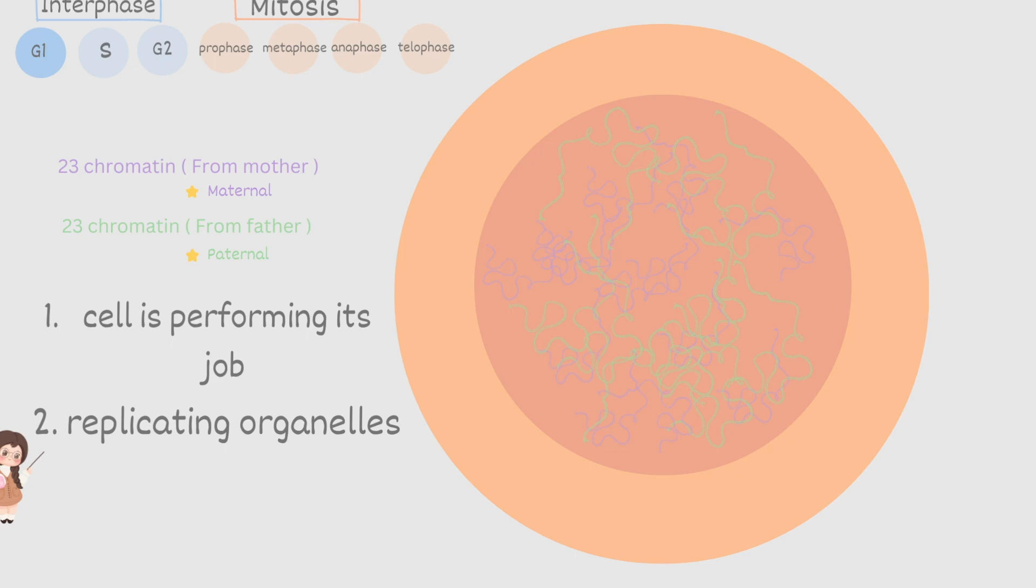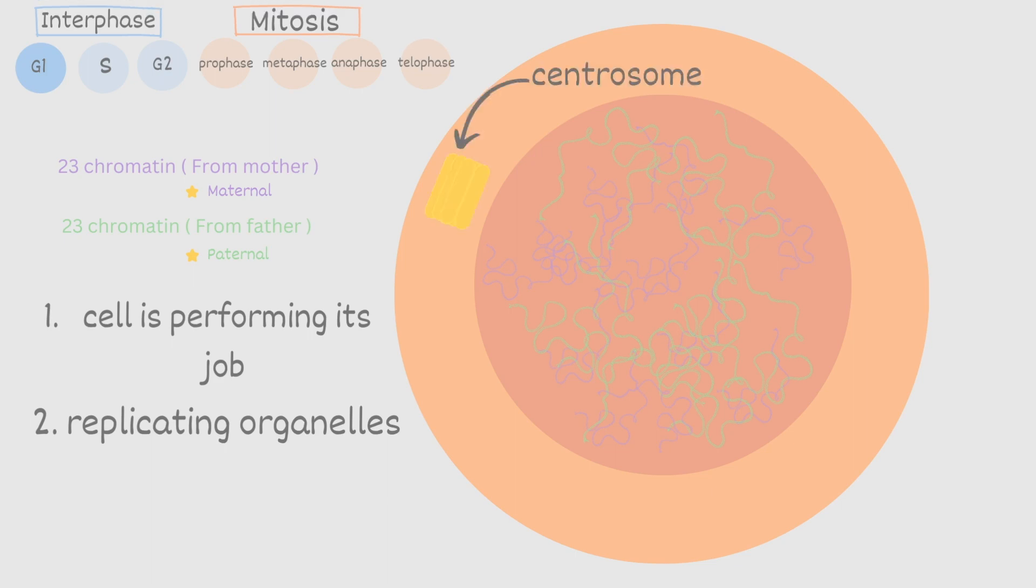One of the major organelles it duplicates is the centrosome. The centrosome has a huge role in DNA replication. It's going to assist moving the chromosomes in almost the entire process. Don't get centrosomes confused with centromere. Centromere, remember is at the center of each chromosome and the centrosome is referring to the structure outside of the nucleus that eventually creates microtubules that assist with moving the chromosomes.